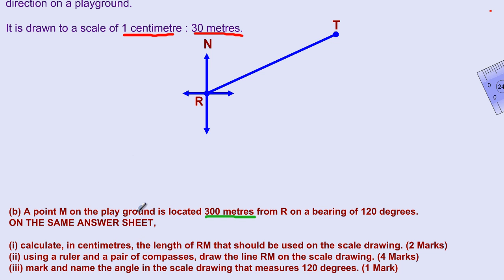They gave it to us, 300 meters from R. They want us to calculate in centimeters. Earlier when we were converting from centimeters to the actual distance, we had multiplied. So for part one, if we are converting from actual distance to the map distance, my friends, we would have to do the opposite of multiplication, which is to divide by the 30 meters. Therefore RM is equal to the 300 meters divided by the 30.